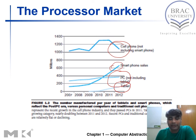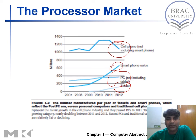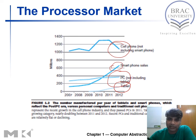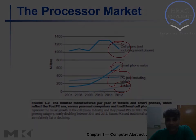So this is the processor market overview. You can see the detail of this diagram — it is Figure 1.2 in our textbook — with a detailed explanation there.